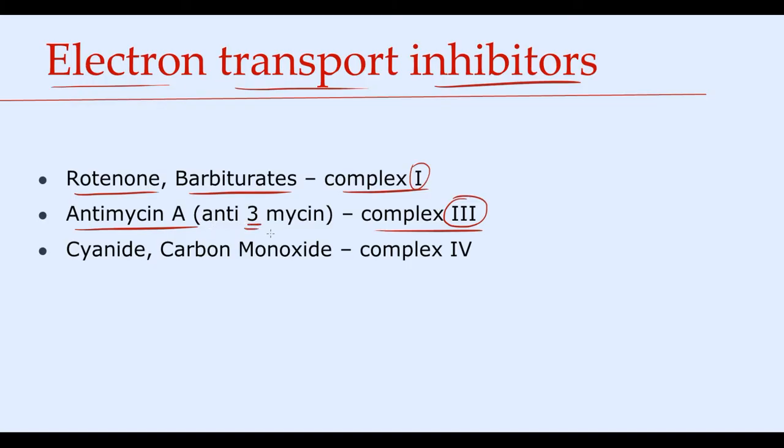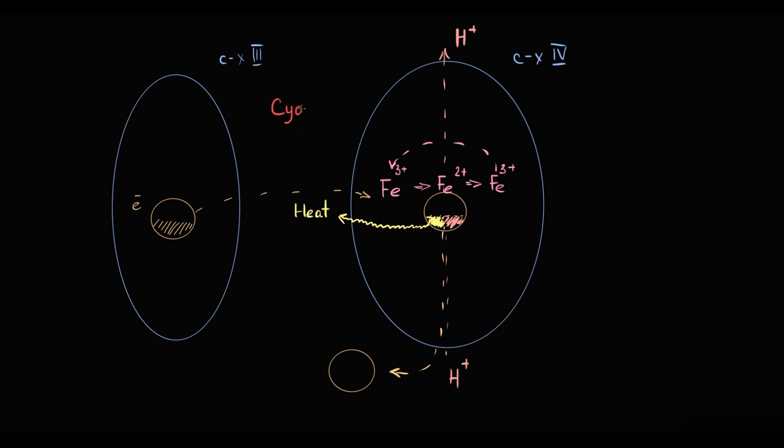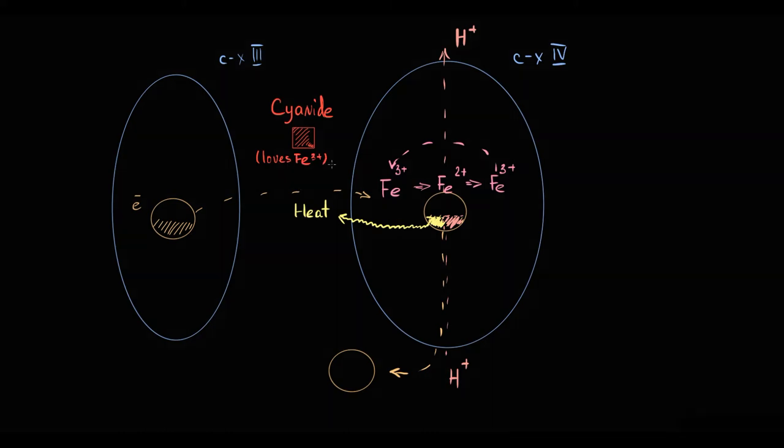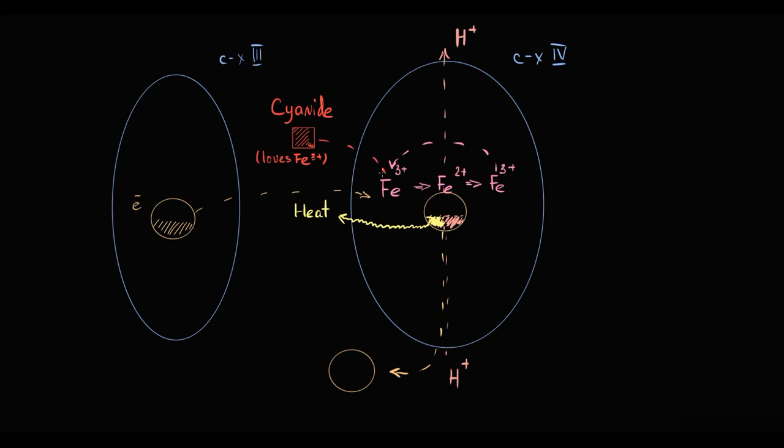But the most high yield to know is that cyanide and carbon monoxide are inhibitors of complex IV. To explain this, recall that cyanide loves ferric iron, which is iron in plus-3 state. And love is an underestimation, it literally obsesses with it. Once cyanide meets ferric iron, it binds to it and never lets it go.